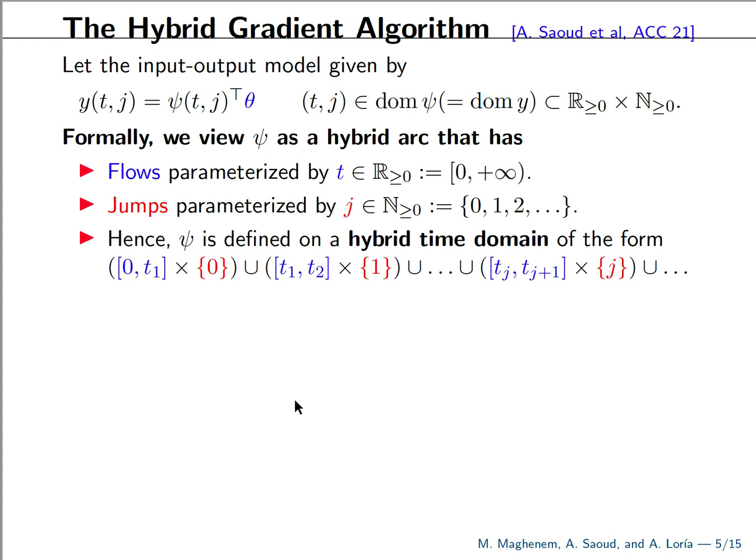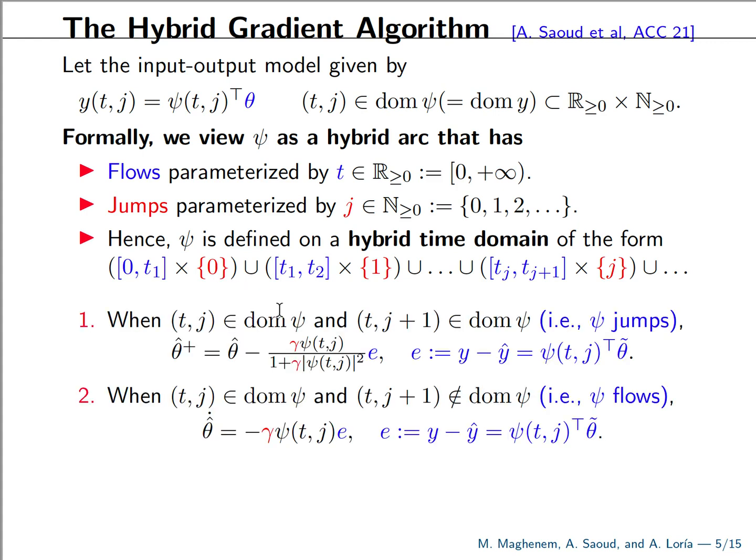So to formally formalize this, we view our signals as hybrid signals. And for this, we need two variables, the T variable that captures the normal time, the flow, and the J variable that captures the jump. And we say that our regressor signal is defined on a hybrid time domain in which we have two variables. And the hybrid time domain is union of intervals and the jump index at which the interval of flow occurs. So our algorithm can be expressed as follows. If our regressor jumps, we update discreetly using the same update law, the same discrete update law.